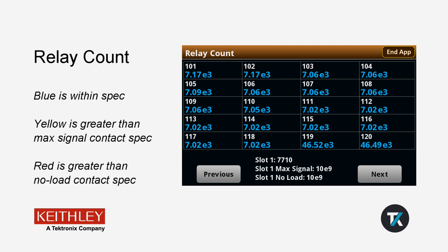The number is displayed in blue if it is within spec, yellow if it exceeds the max signal contact spec, and red if it exceeds the cold closure or no load contact spec. The specifications for the inserted card are displayed at the bottom of the screen.